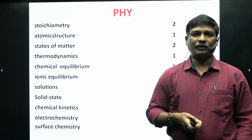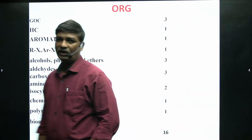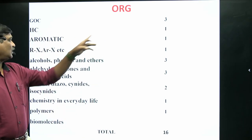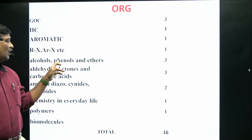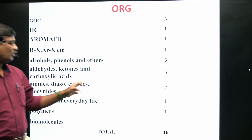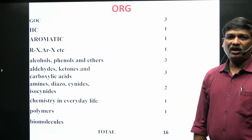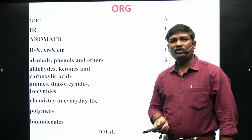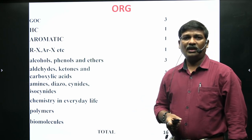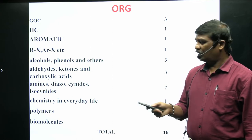For organic chemistry chapter-wise: general organic chemistry gave 3 questions, atomic structure 1 question, hydrocarbons 1 question, alkyl halides 1 question, alcohols phenols and ethers 3 questions, aldehydes ketones and carboxylic acids 3 questions, amines and diazonium salts 2 questions, chemistry in everyday life 1 question, polymers 1 question, and biomolecules gave no questions. Overall 15 questions, with only 2 very difficult questions — both in Section B where we have choice, so we can leave them.